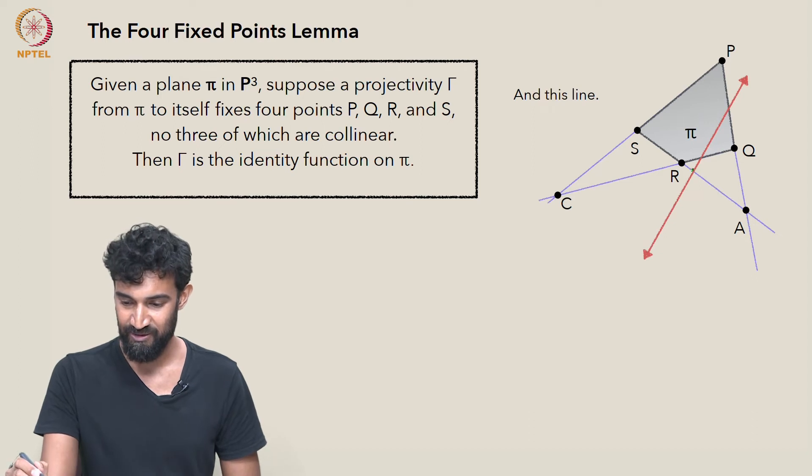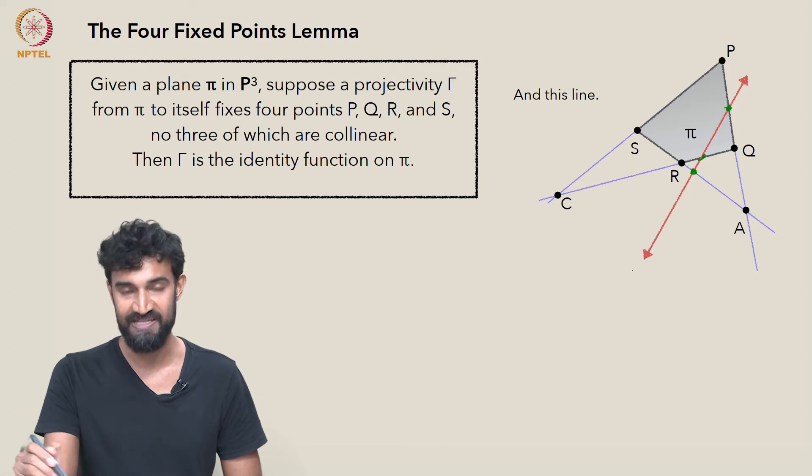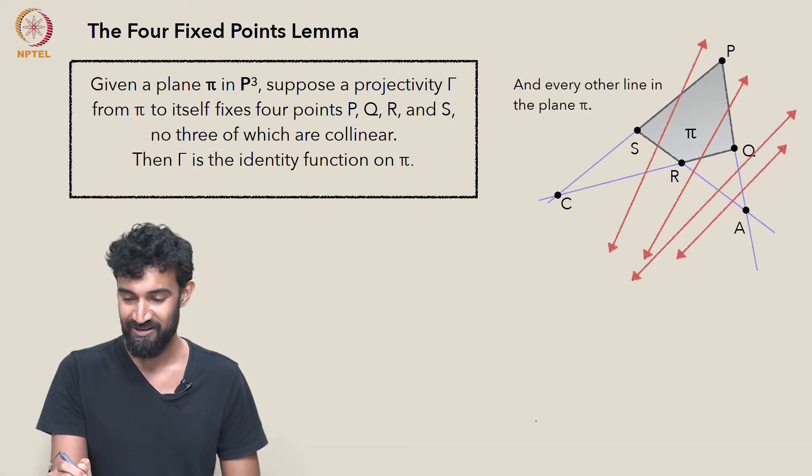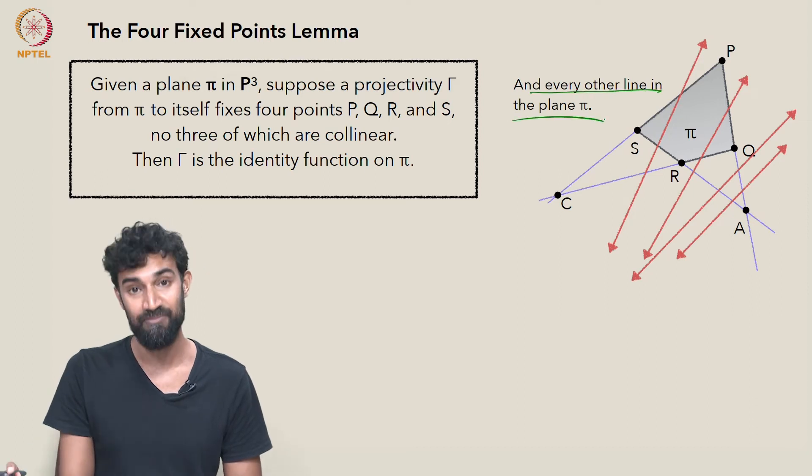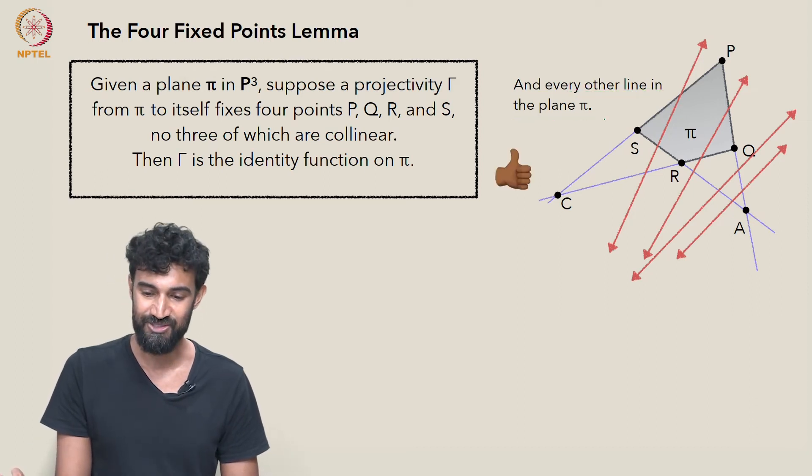This line, we know it has three fixed points. So by the three fixed points theorem, γ fixes the entire line. Same with all of these lines and every other line in the plane π. So that does it.